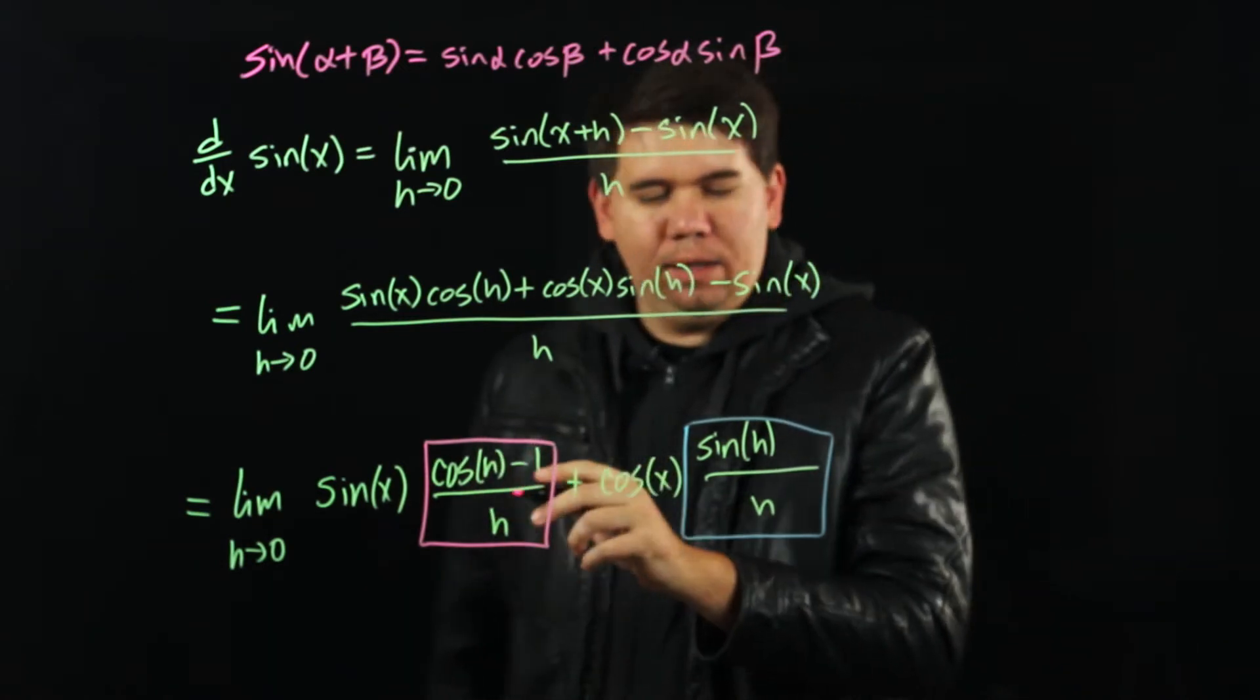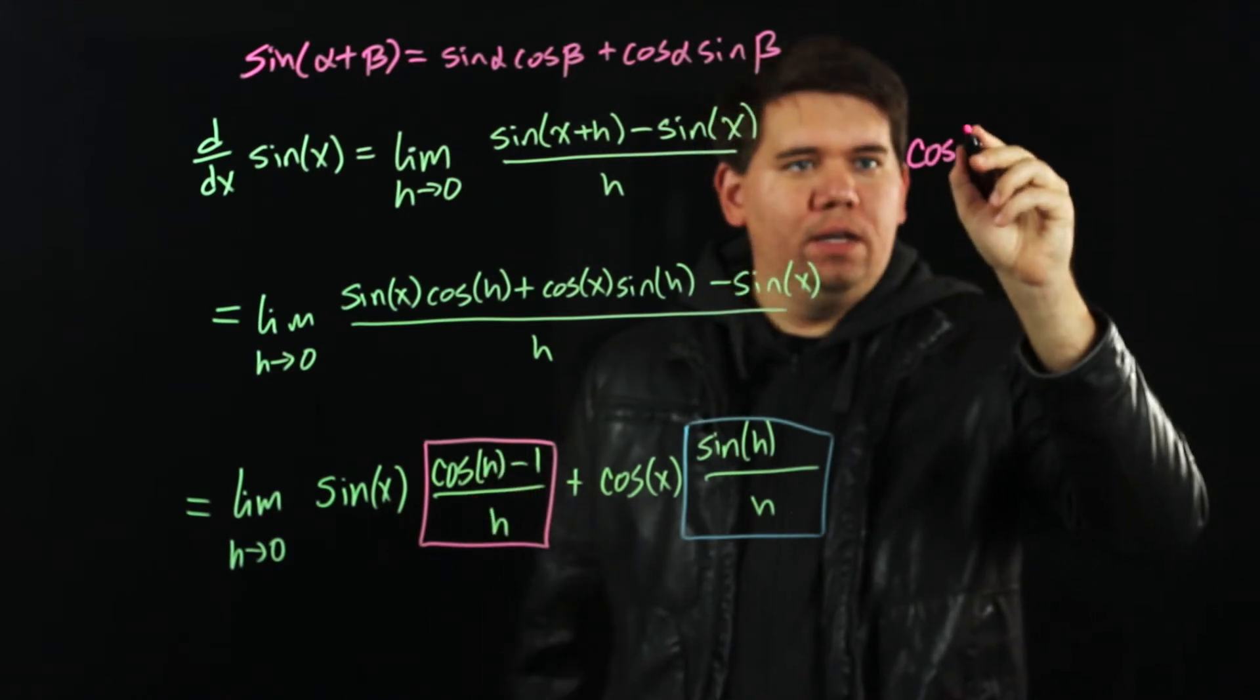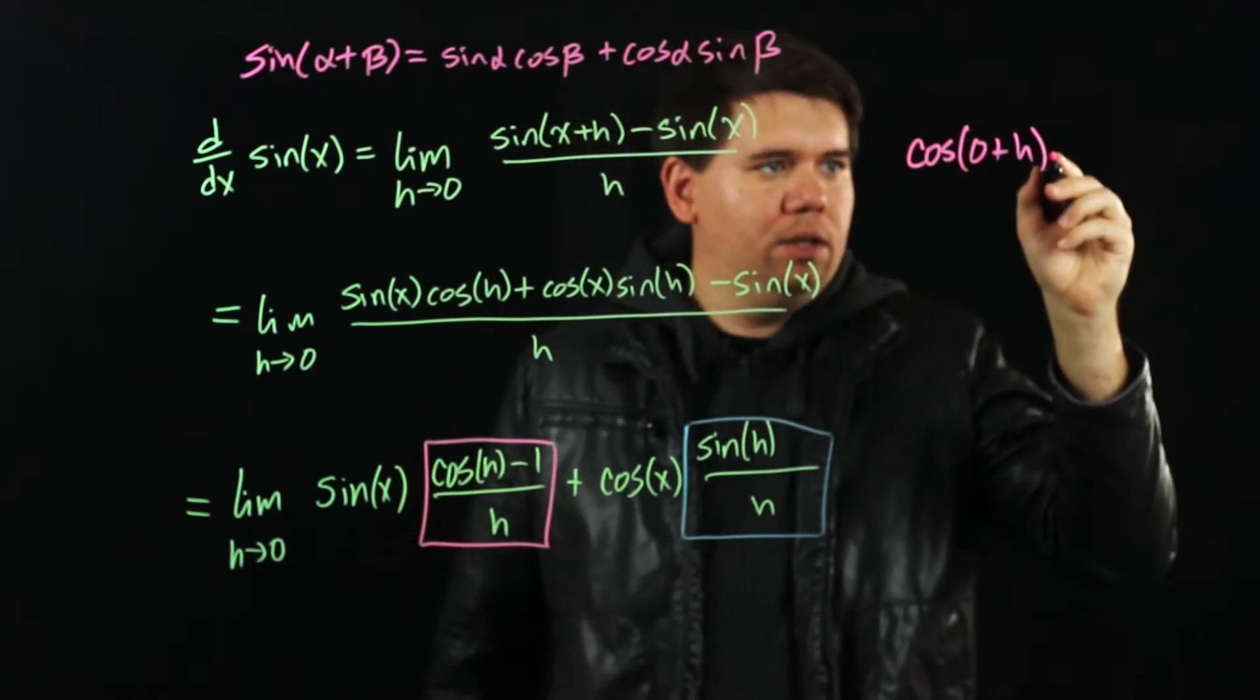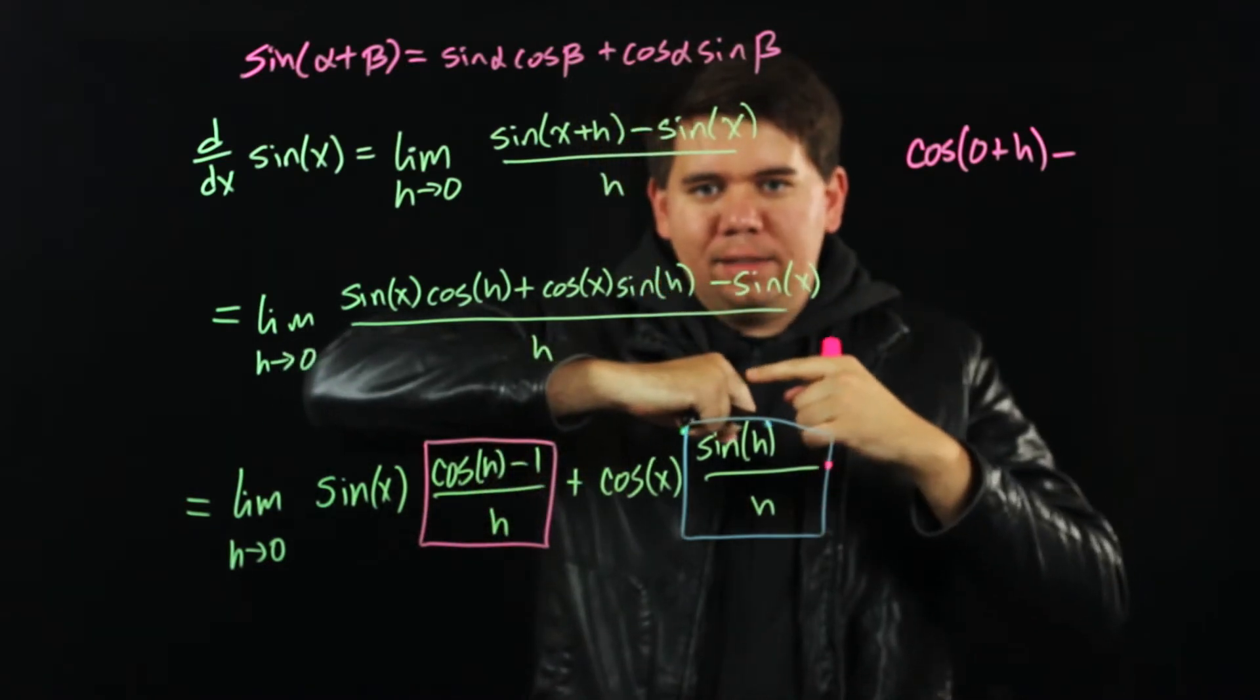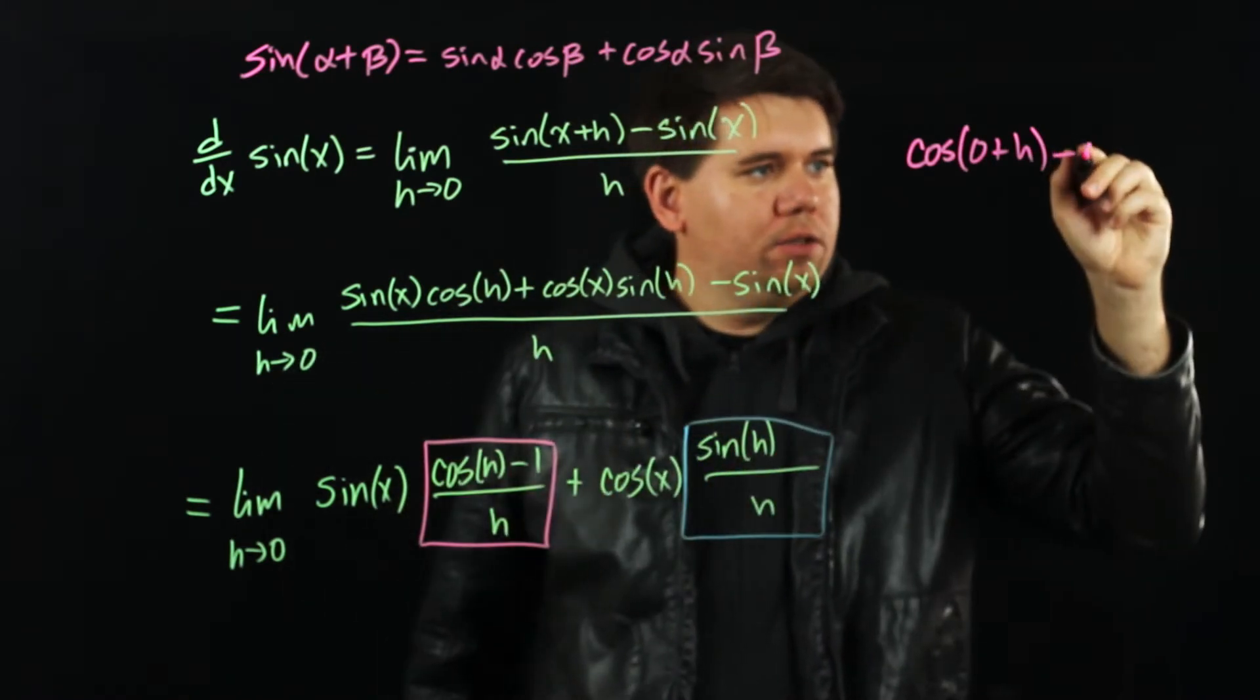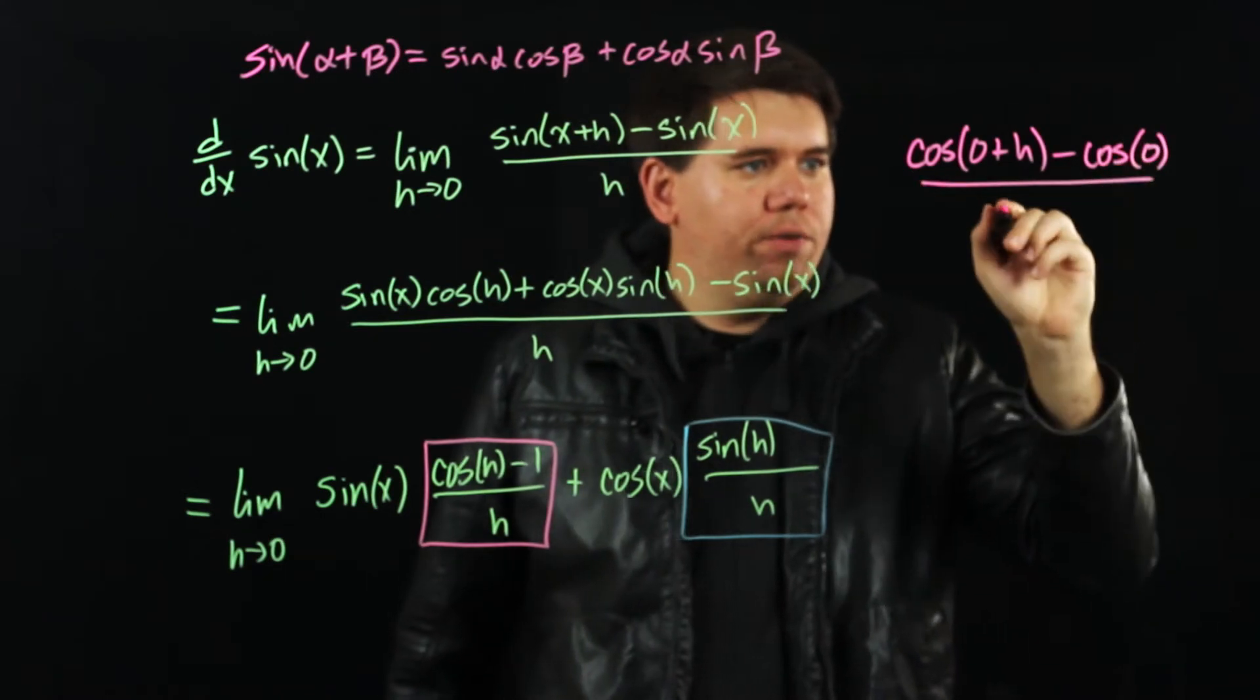Notice, that's the same thing as cosine of 0 plus h, minus 1. What is 1? Well, 1 is what cosine is at 0. On your unit circle, at 0 your cosine is 1. So that's minus cosine of 0 all over h.